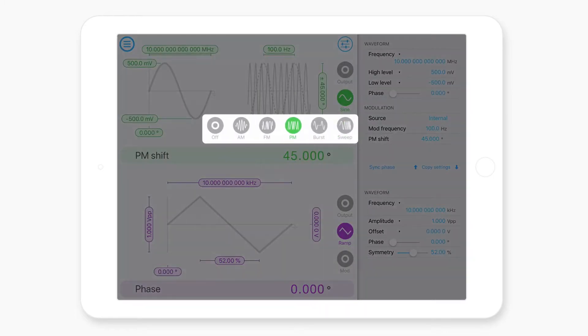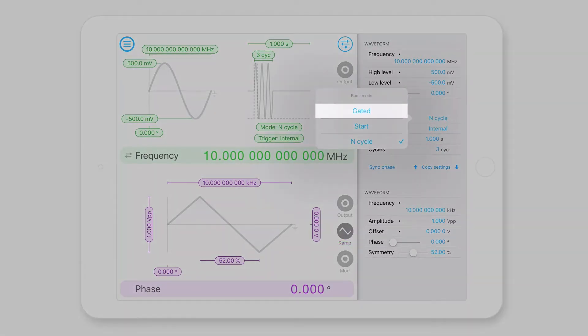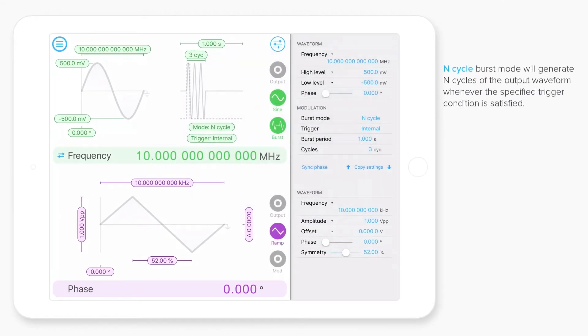And then we also have burst modulation. So there are three different modes here. One is called gated. The second is called start. And the other is called end cycle. In end cycle burst mode, essentially what happens is a trigger event will occur and produce end cycles of the waveform before settling and then waiting for another trigger event.